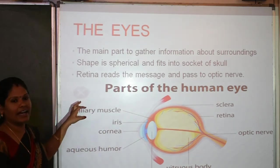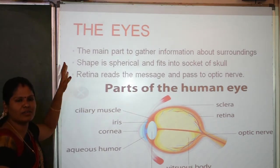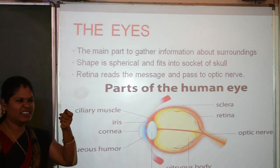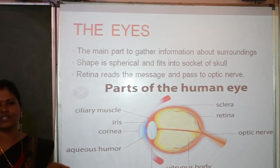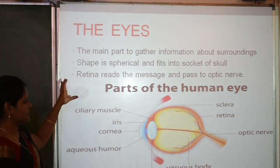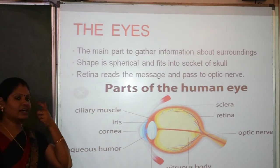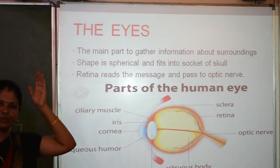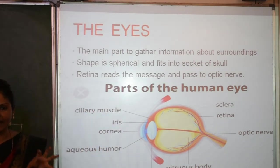So are you clear about the eyes? The eyes are the most sensitive sense organ. If anything touches them, they will suddenly get red because they are so sensitive. The eye is spherical in shape and fits into the socket. The retina reads the message and passes it through the optic nerve to the brain, and the brain orders what actions are to be performed.